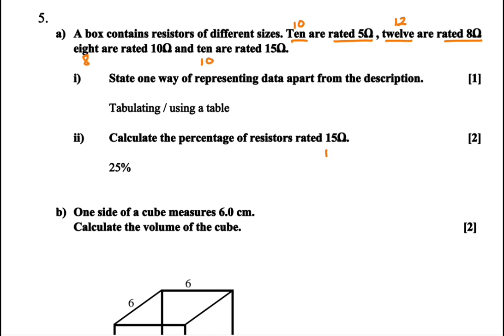So in total, the total number of resistors is equal to 10 plus 12 plus 8 plus 10. So in other words, we have about 40 resistors. We have 40 resistors.